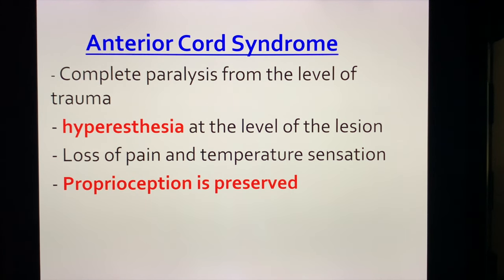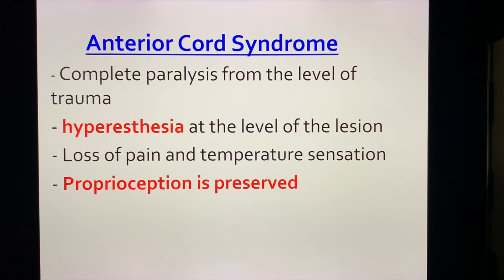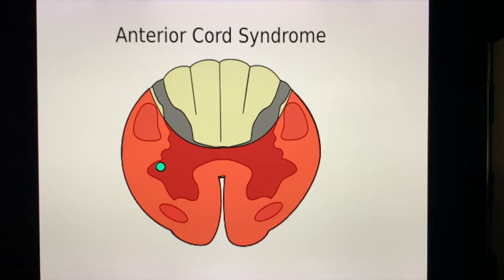Anterior cord syndrome results from complete paralysis from the level of trauma. On physical exam, the patient will present with hyperesthesia at the level of lesion and loss of pain and temperature sensation. The pearl to memorize: in anterior cord syndrome, supplied by the anterior spinal artery — the anterior two-thirds — the posterior one-third is spared. That explains why proprioception and vibration would be preserved, because it's only the anterior two-thirds which is affected. The affected area is the area supplied by the anterior spinal artery — anterior two-thirds.